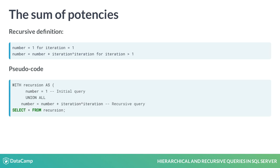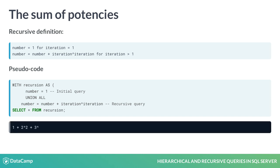The pseudocode for this example looks as follows. You have to define the initial query and the recursive query according to the definition of the recursive function. For example, for 3 iterations, you calculate the sum of 1 plus 2 to the power of 2 and 3 to the power of 3. The result is then 14.